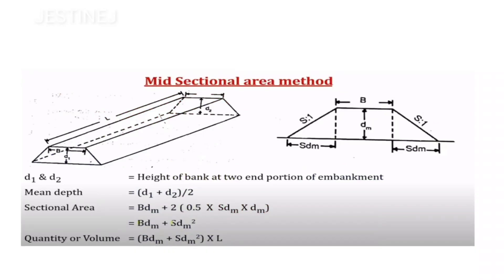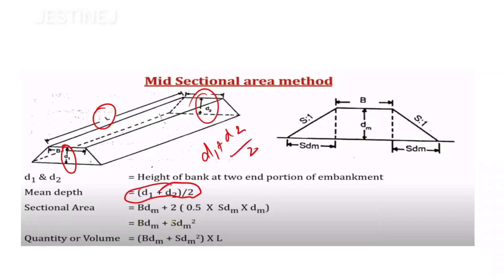One method used to estimate road earthwork is the midsectional area method. The road section has total length L, with different depths d1 and d2 at each end, and a uniform formation width b. Using this method, you calculate the mean depth dm = (d1 + d2) / 2, then apply the same area formula using dm: area = b×dm + s×dm².